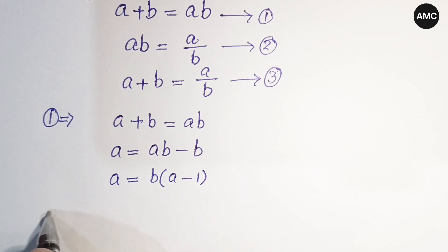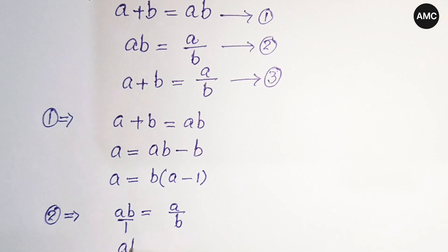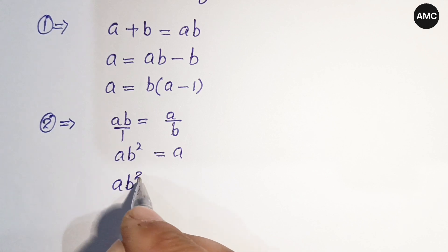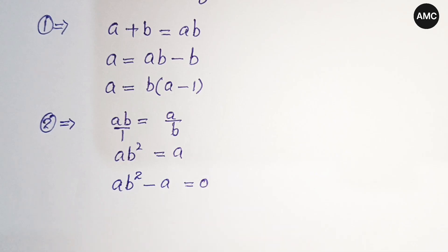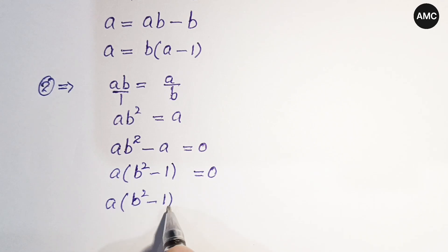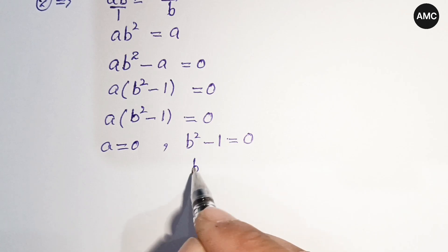From equation two, a times b equals a over b. Cross-multiplying gives a times b squared equals a. Shifting a to the left side: a·b² minus a equals zero. Factoring out a, we get a times (b² minus 1) equals zero.